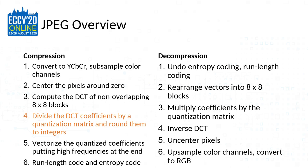So when we talk about JPEG as a lossy compression algorithm, this is the only place where that happens. Any artifacts that can be quite complex in the image are only a result of this relatively simple operation in step 4. The decompression algorithm is simply the inverse process, but of course the step 4 rounding cannot be fully reversed.